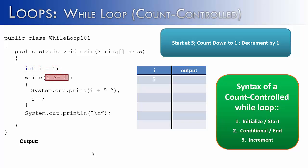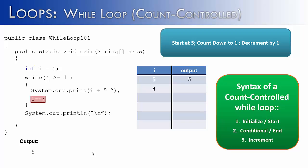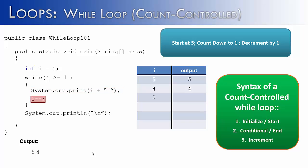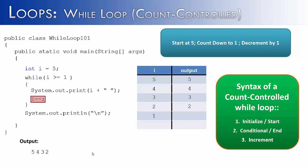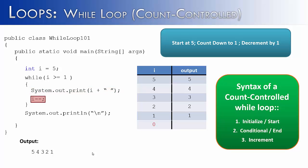We start at 5, check the condition — yes, that's true — print out 5. Decrement by 1, i is now 4, condition is true, print 4. Decrement, i is 3, condition is true, print 3. Decrement, i is 2, condition is true, print 2. Decrement, i is 1, condition is true, print 1. Then i becomes 0, the condition is no longer true. The output of our loop is 5, 4, 3, 2, 1.